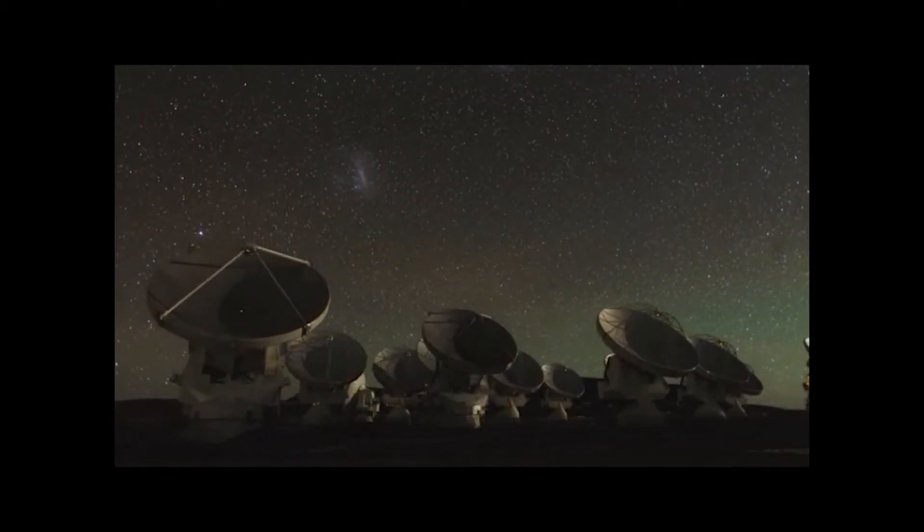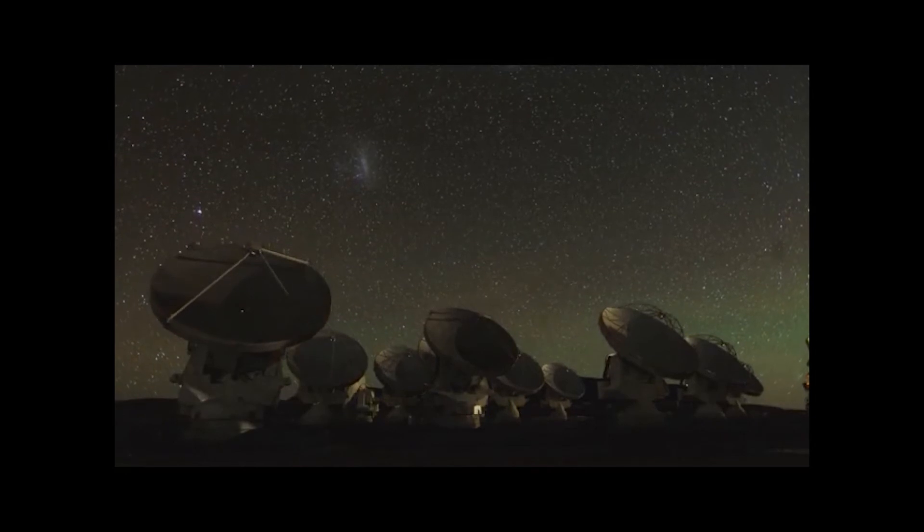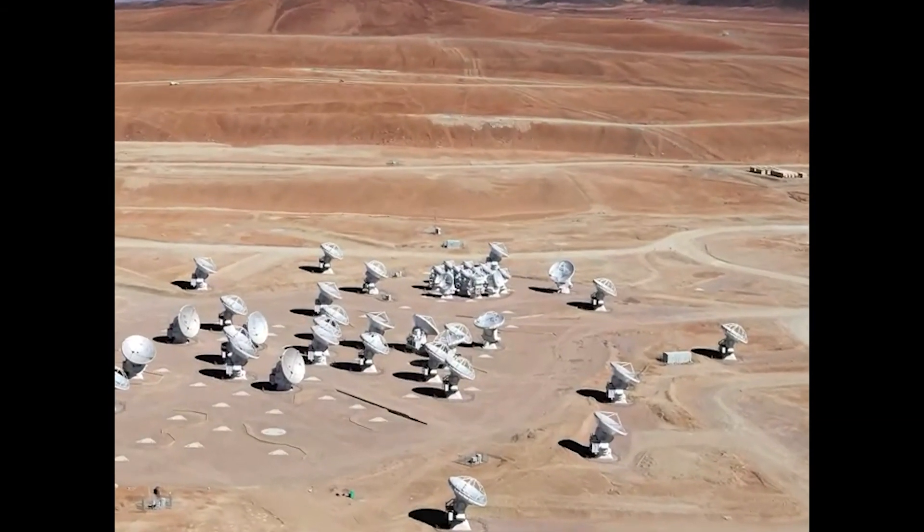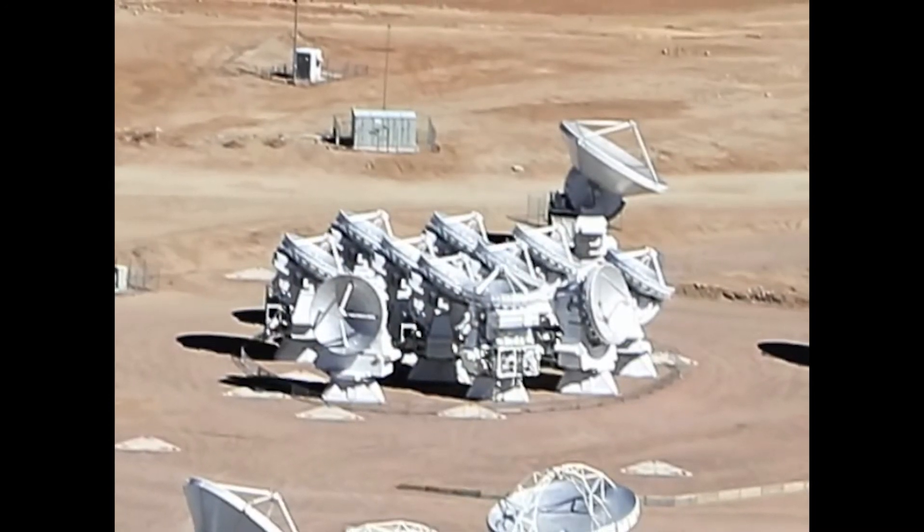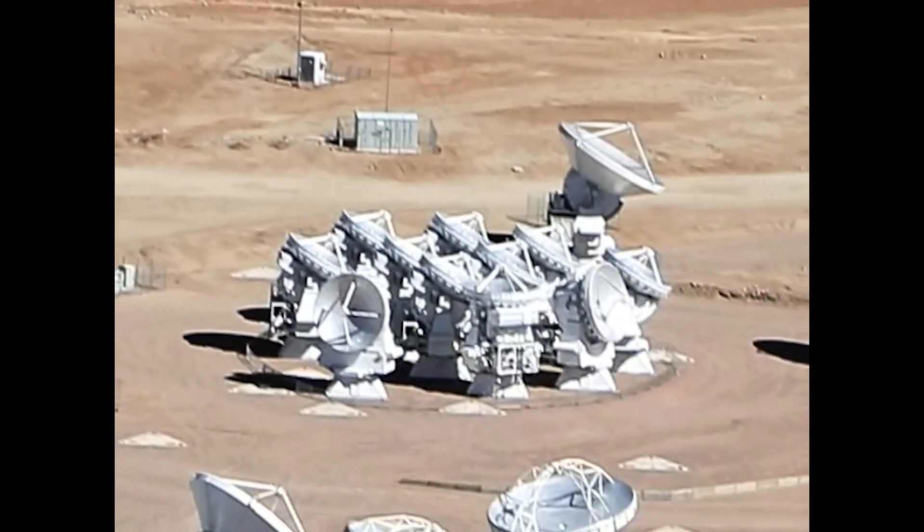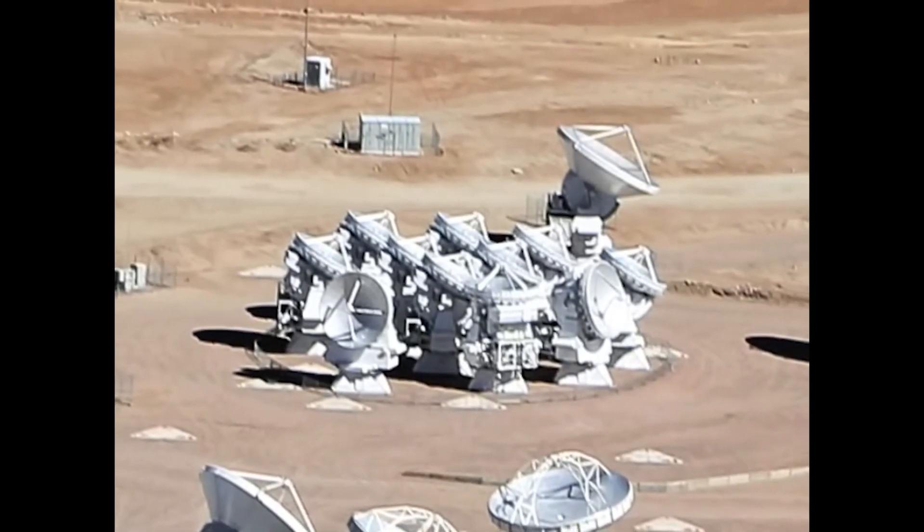But if very large size scales are needed, it may be necessary to combine observations with the ACA 7 meter array, whose antennas can be located very close together, and with the total power array, a set of four 12 meter single dish telescopes to get the very largest size scales.